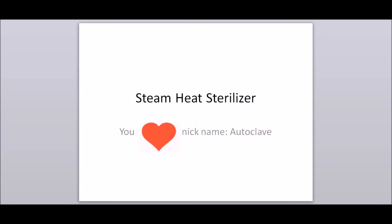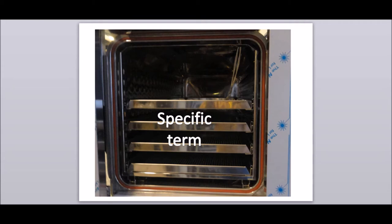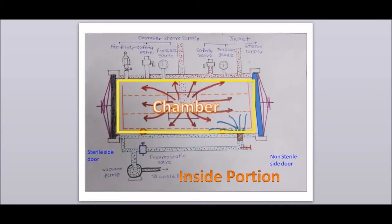In this video, we are going to understand the steam heat sterilizer, generally called autoclave. Some specific terms are used during cycle design, development, qualification, and during routine operation. The chamber is a main part of the autoclave that contains the item to be sterilized. The chamber is pressure tested during manufacturing, generally at a higher pressure than the operating pressure.